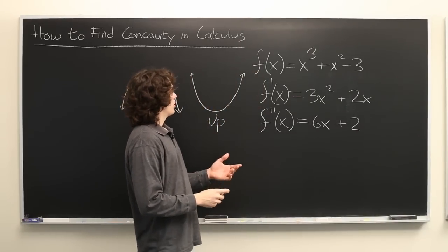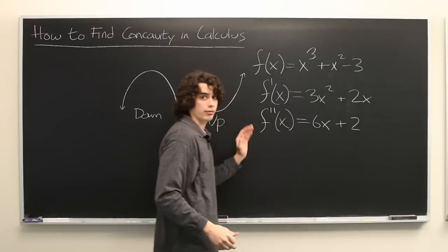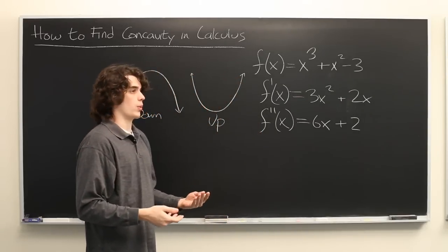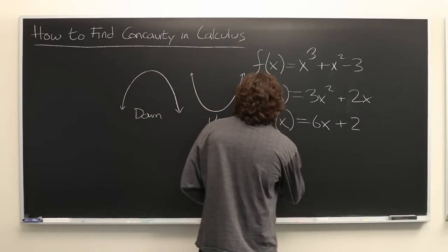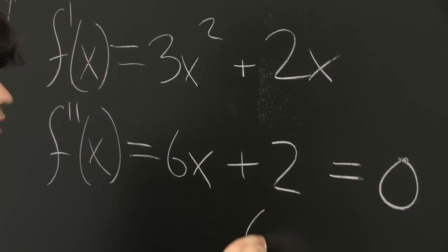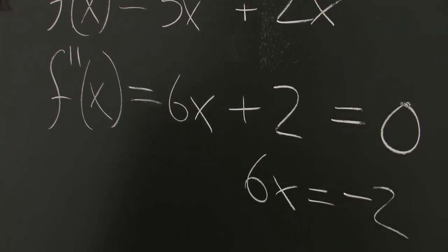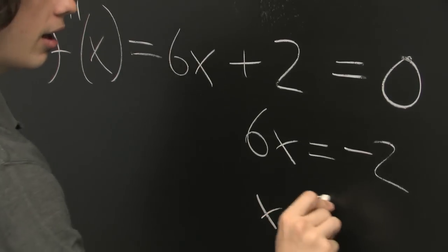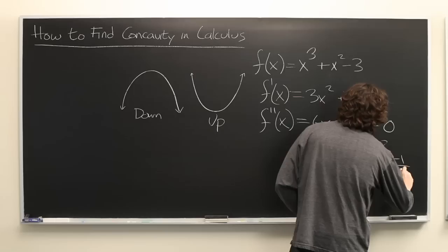So what we want is to characterize where this is positive and where this is negative. So what we really want to know is when does it equal 0? So we can set this equal to 0. We get 6x equals negative 2, x equals negative 2 over 6 or negative 1 third.